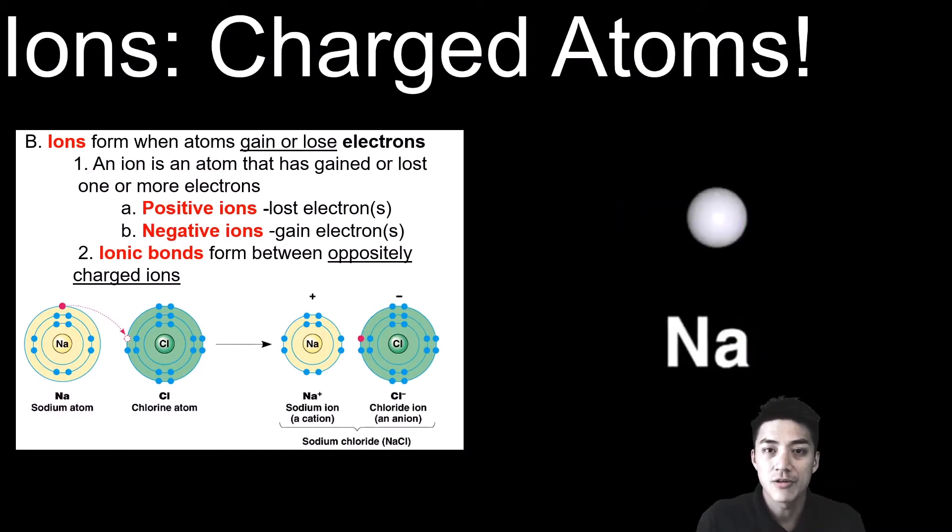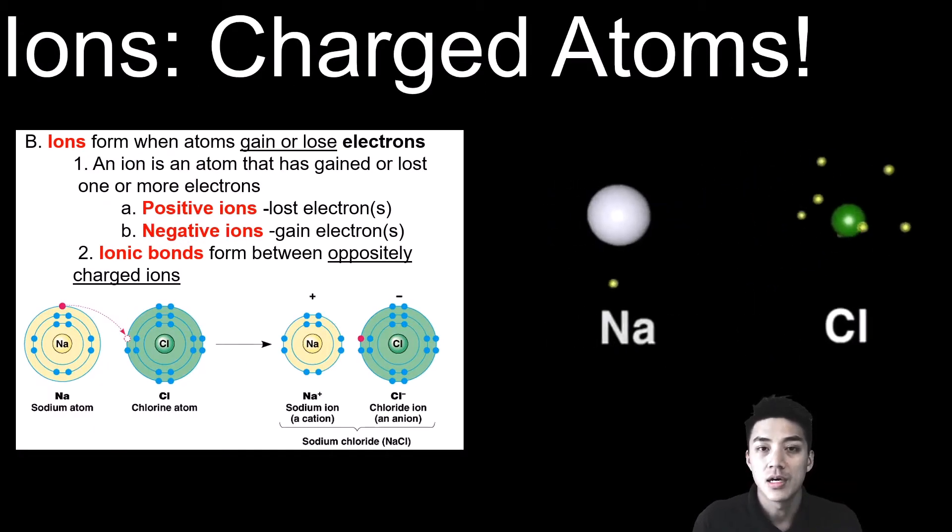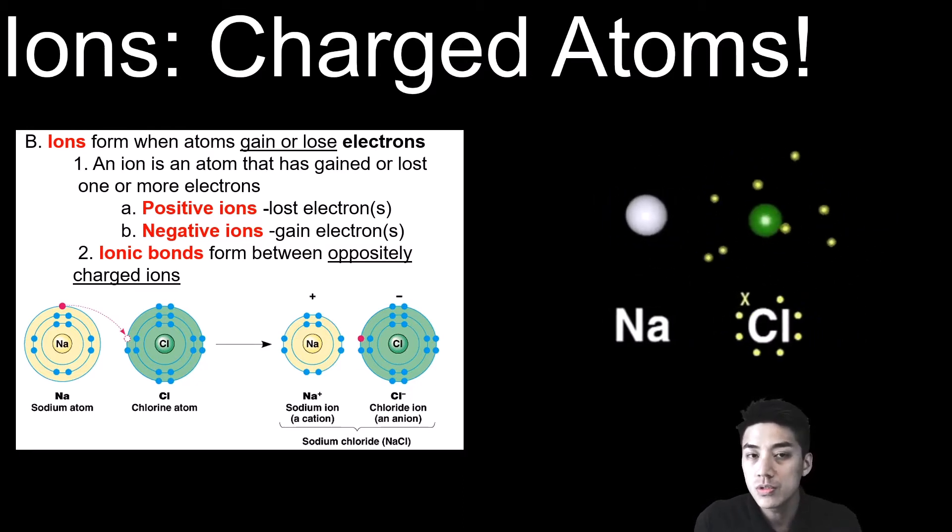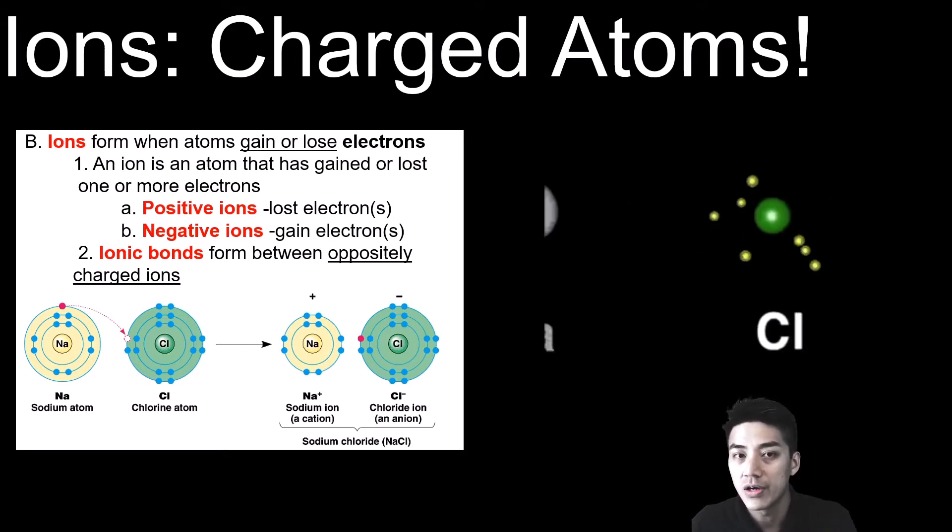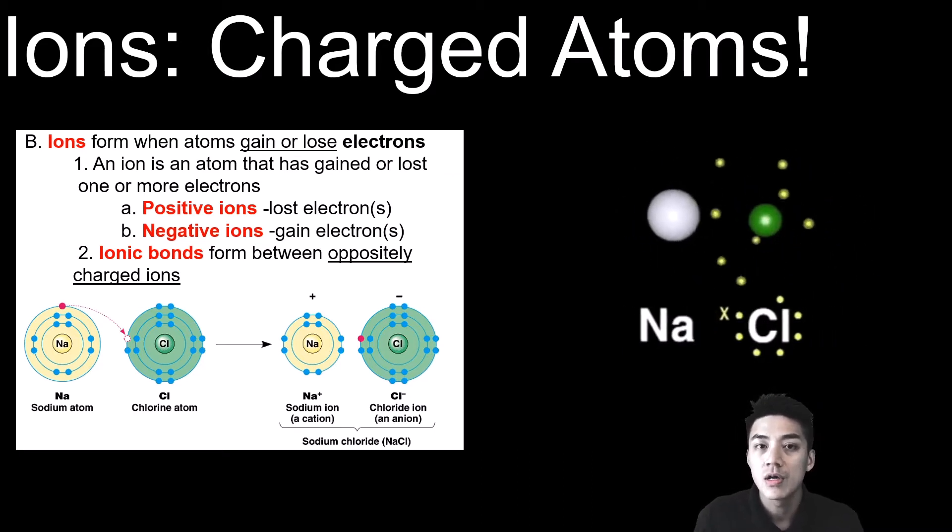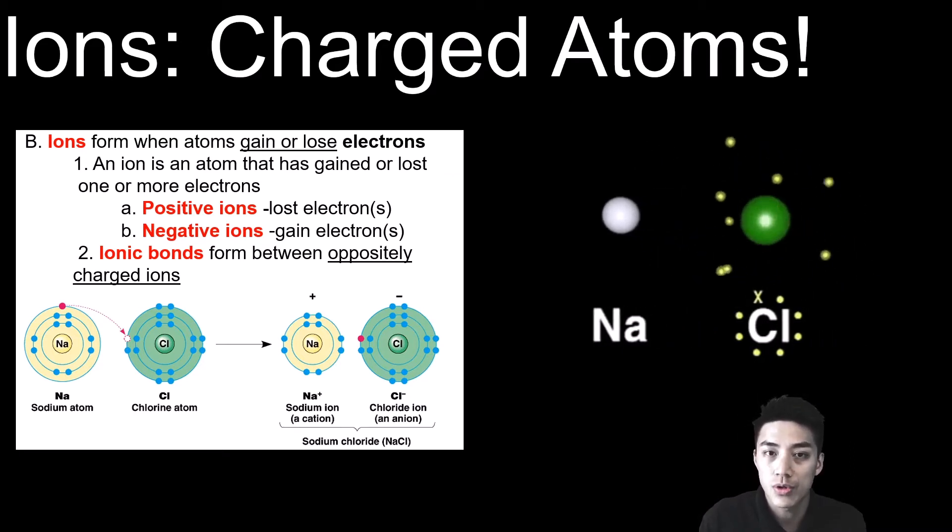Ions form when atoms either gain or lose electrons. Electrons are negatively charged particles, which means when you lose electrons, overall you become more positive. You become a positive ion. When you gain electrons, you're taking on something that's negative, overall your charge becomes more negative.